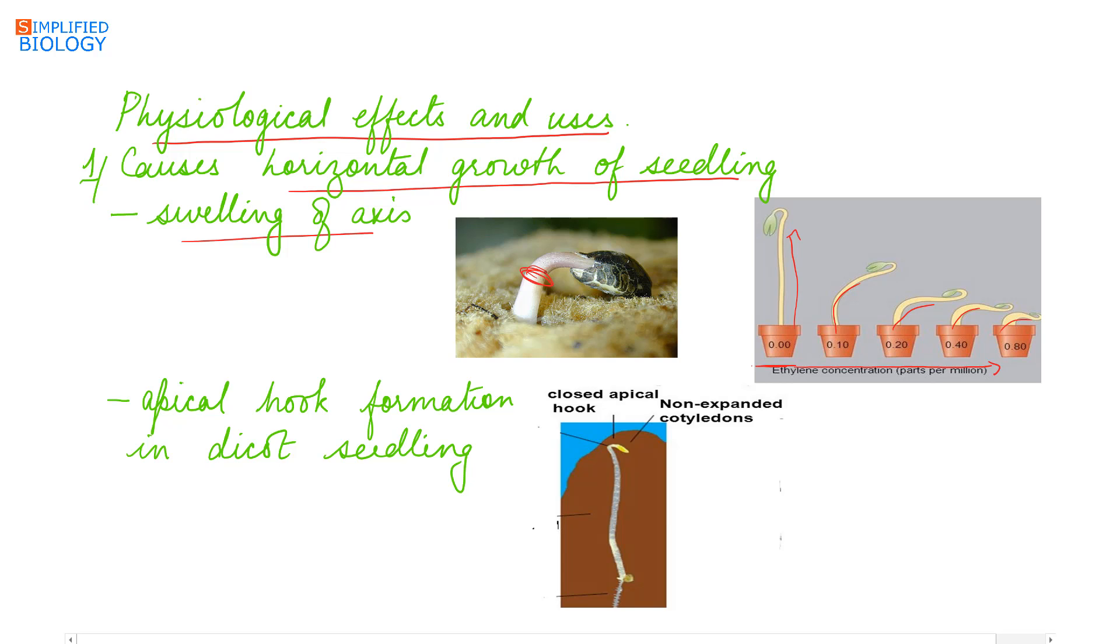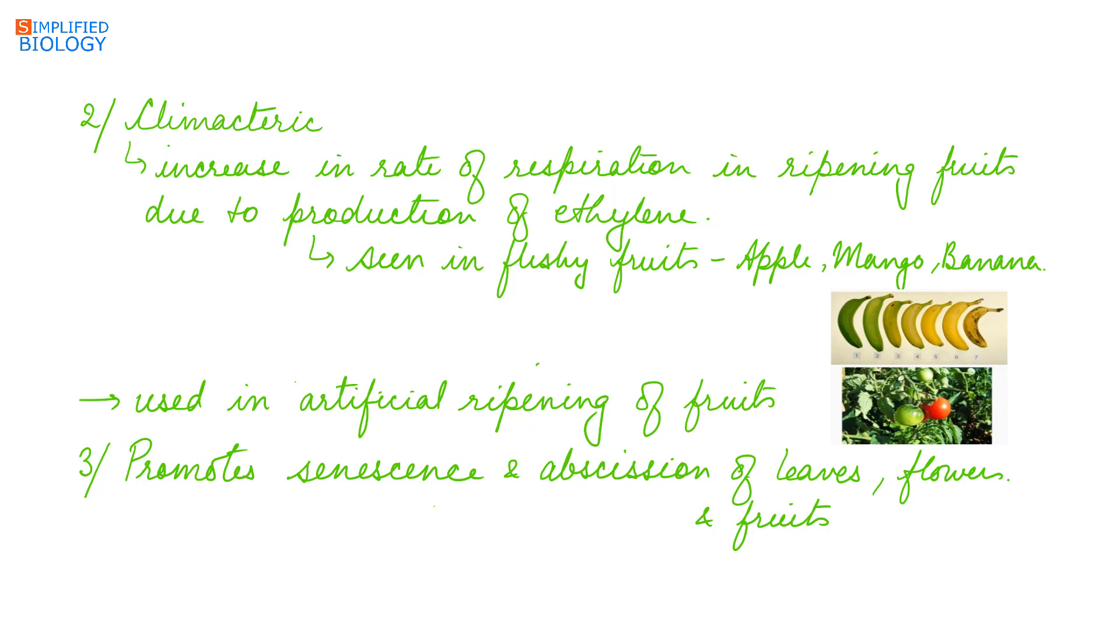Next effect is climacteric. Climacteric is increased in the rate of respiration in ripening fruits due to production of ethylene. Ethylene is produced in ripening fruits, causing increase in the rate of respiration, hence loosening the fruits and making them softer. This is seen in fleshy fruits like apple, mango, banana.